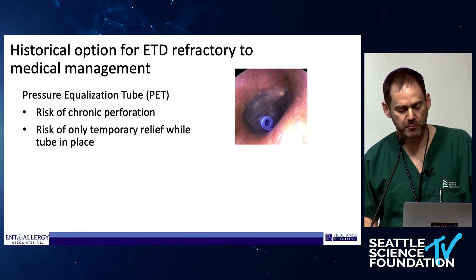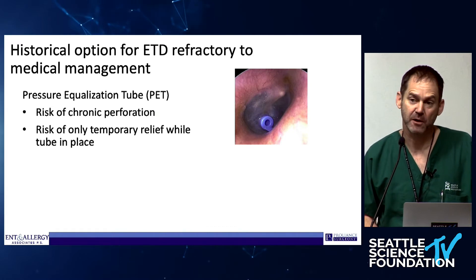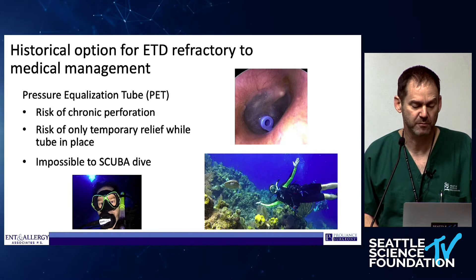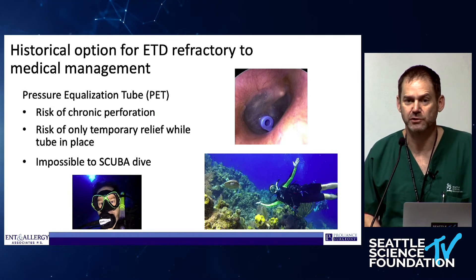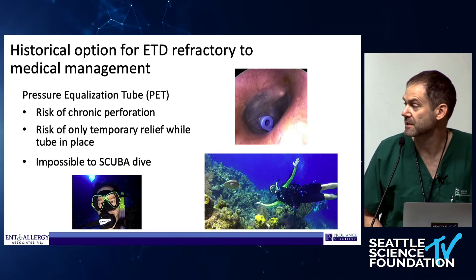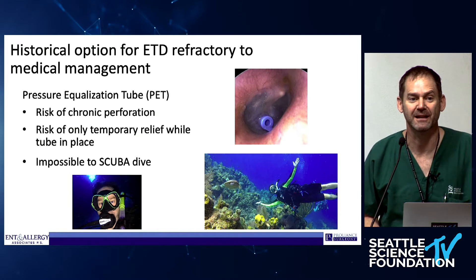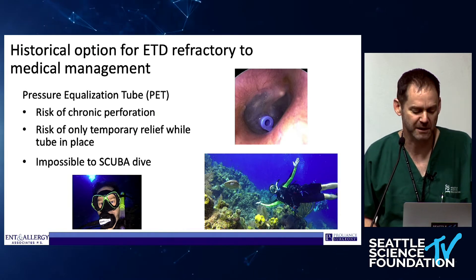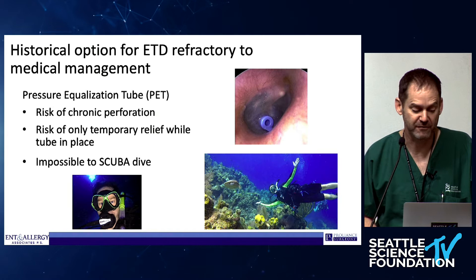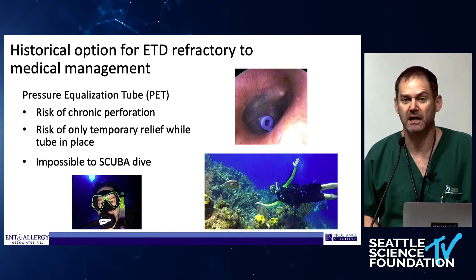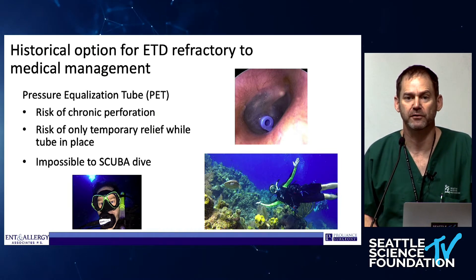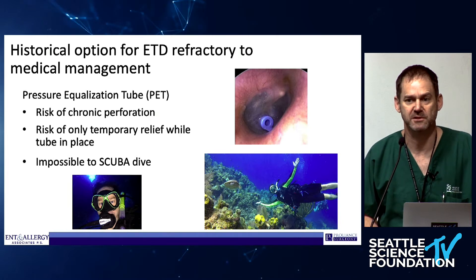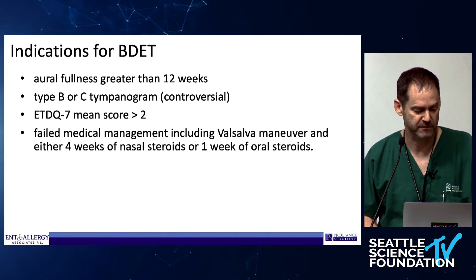There are problems with PE tubes — you can get chronic perforation, and it's temporary relief while it's in there, though sometimes that's enough to normalize the tissue. But the bigger issue is for patients like scuba divers: you can't scuba dive while you have a tube in place. So a lot of commercial divers come in looking for new options. They've heard about balloon dilation of the eustachian tube, and this is a fantastic opportunity for them.